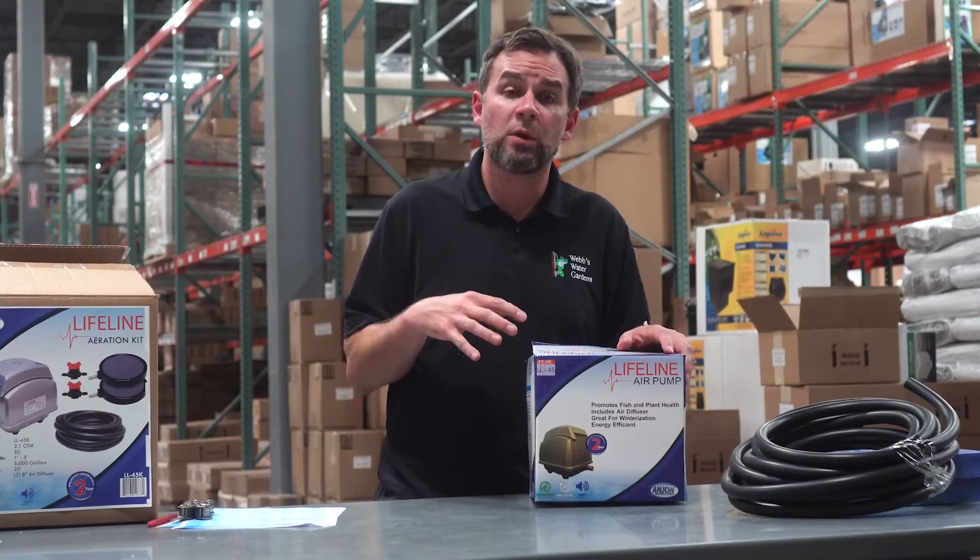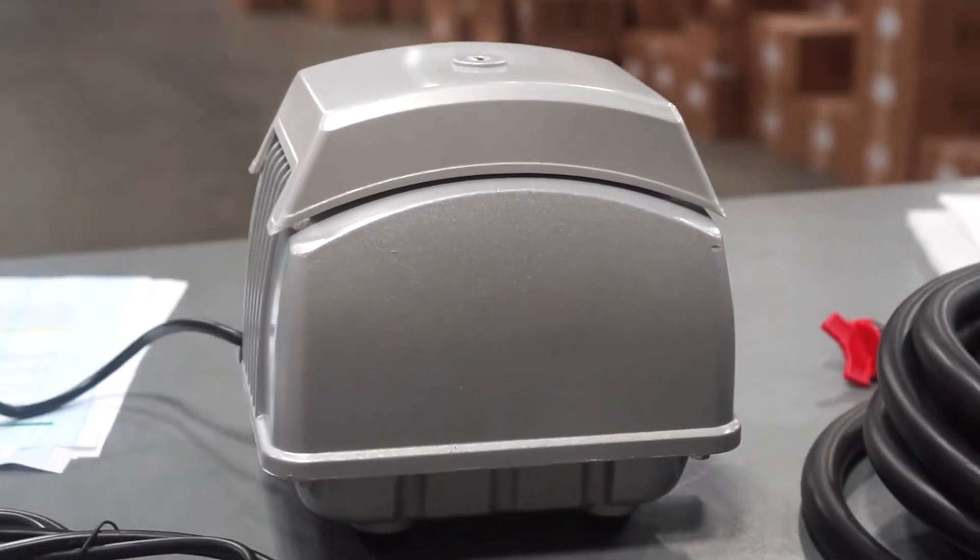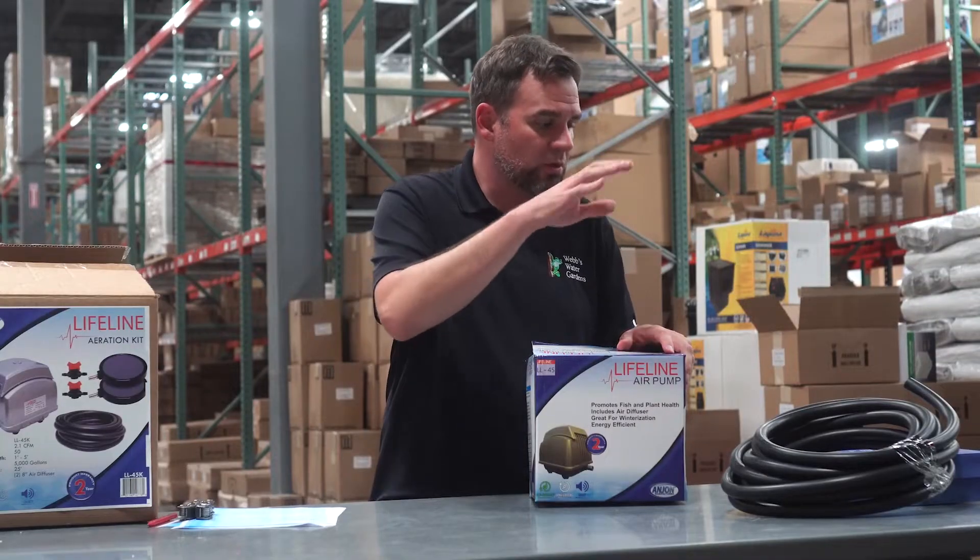So this kit is perfect for those ponds under 5,000 gallons at an optimal depth of about 5 feet. Obviously, you've got pump tubing diffusers.